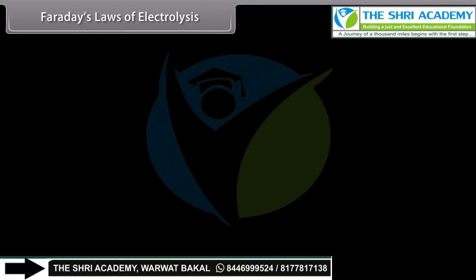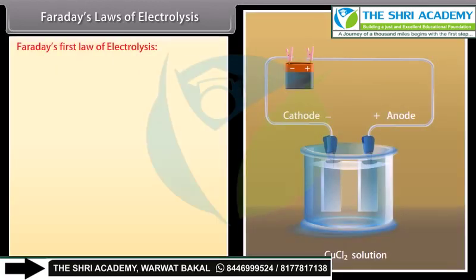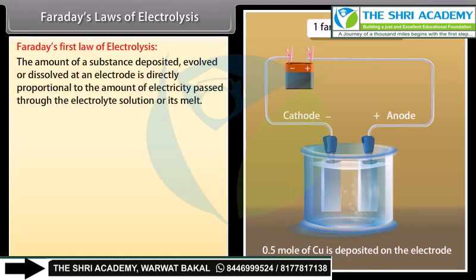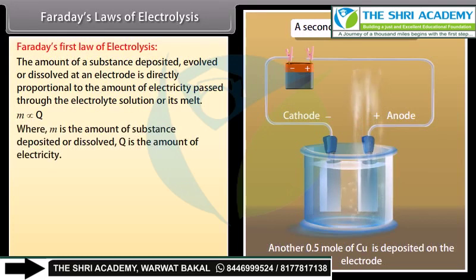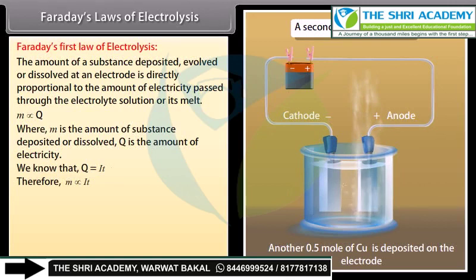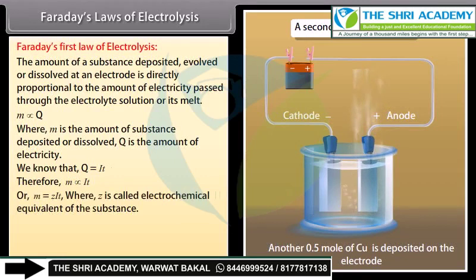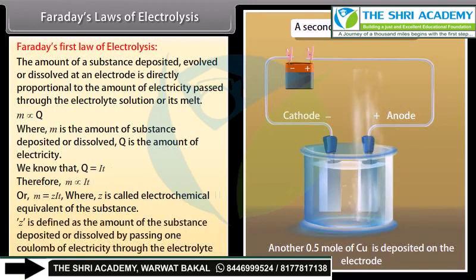Faraday's first law of electrolysis: the amount of a substance deposited, evolved, or dissolved at an electrode is directly proportional to the amount of electricity passed through the electrolyte solution or its melt. M is directly proportional to Q, where M is the amount of substance deposited or dissolved and Q is the amount of electricity. Since Q = IT, we get M = ZIT, where Z is called the electrochemical equivalent of the substance — defined as the amount of substance deposited or dissolved by passing one coulomb of electricity through the electrolyte melt or solution.